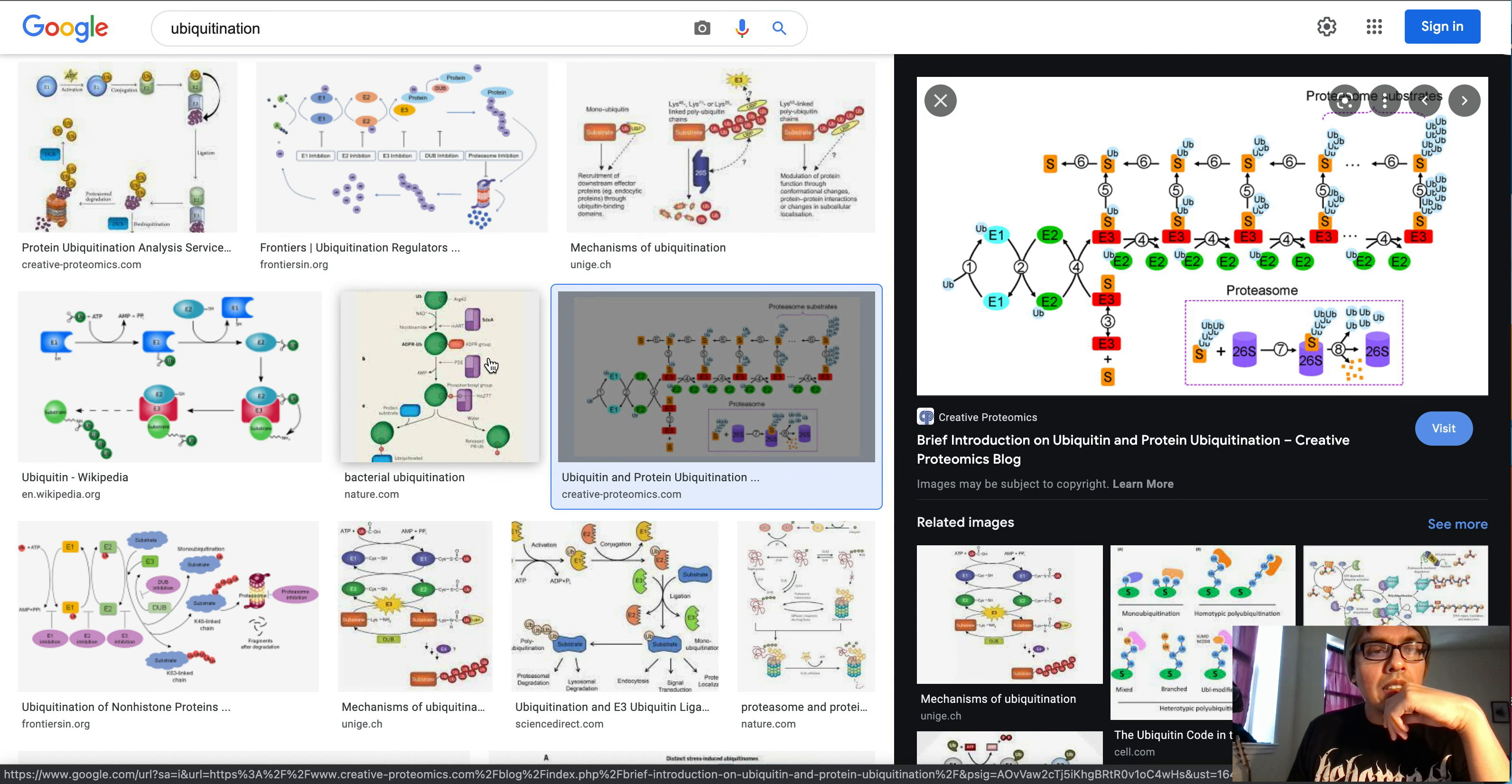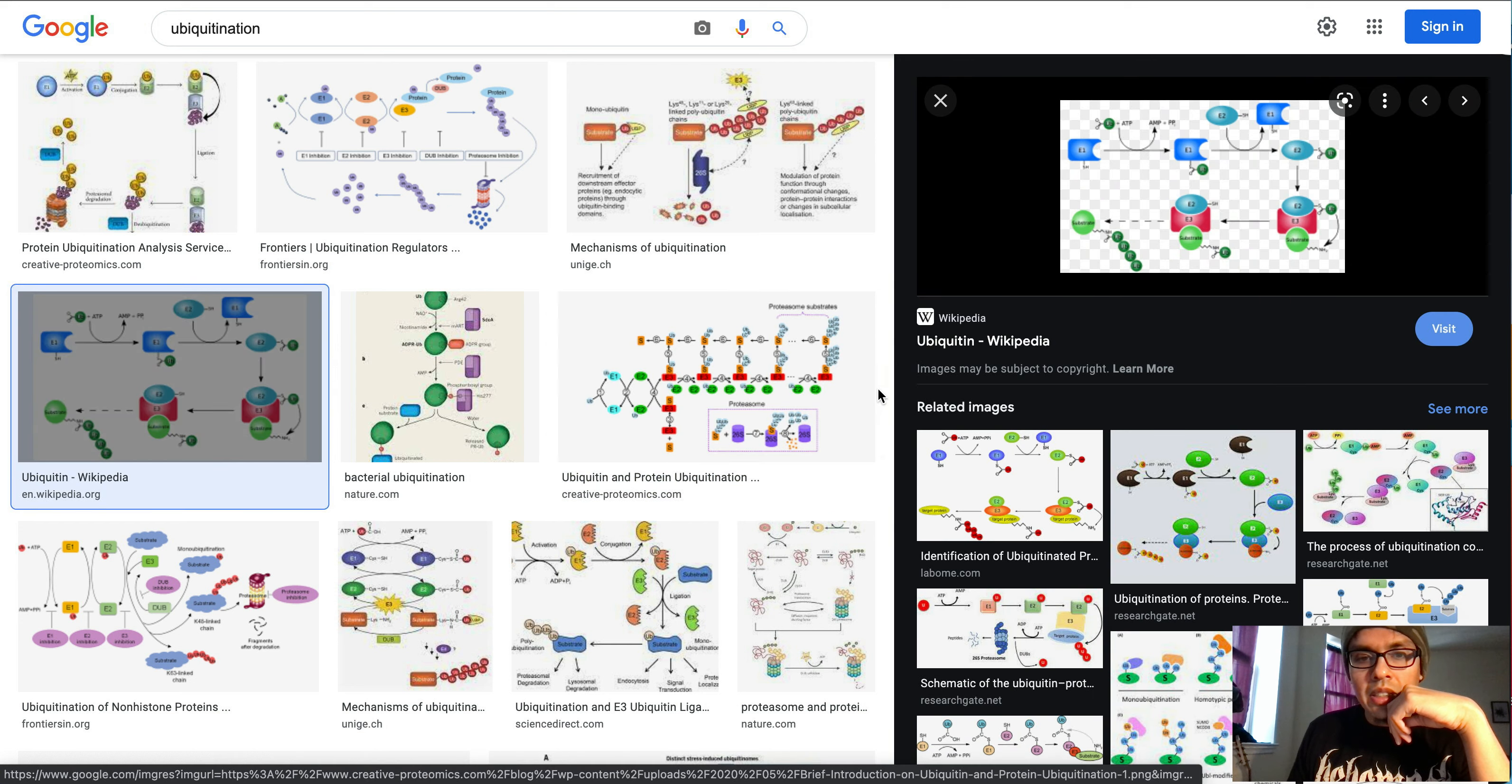Ubiquitination is a multi-step process. There are three enzymes involved in ubiquitination primarily: E1, E2, and E3. E1 is the ubiquitin activation enzyme, E2 is the ubiquitin transfer enzyme, and E3 is the ubiquitin ligation enzyme, basically a ligase.